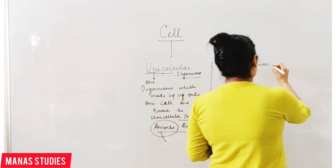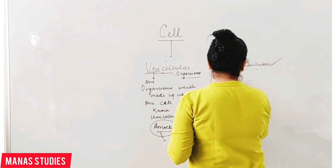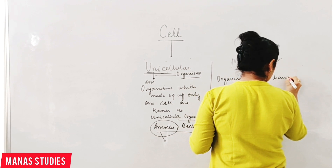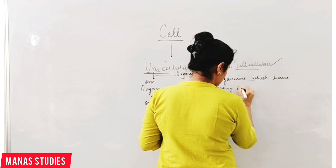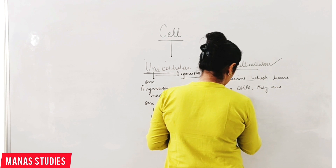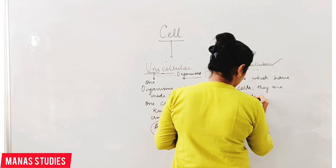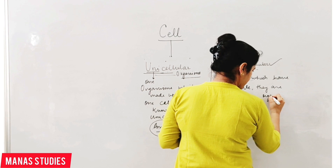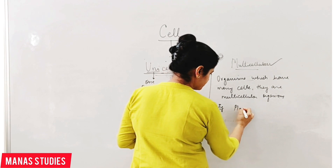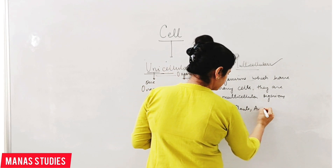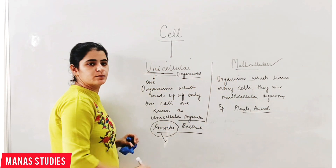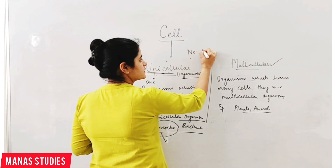Similarly, multicellular organisms are organisms which have many cells. They are multicellular organisms. For example, plants and animals. So these are the types of organisms on the basis of number of cells present.